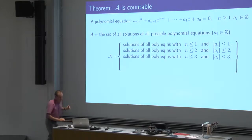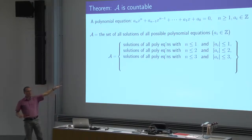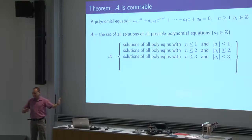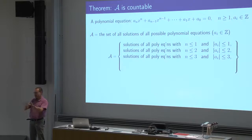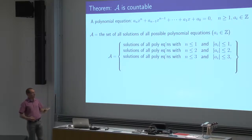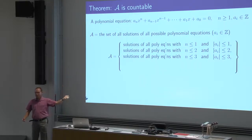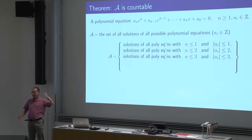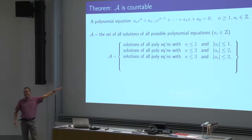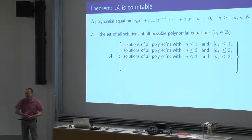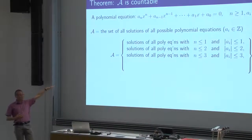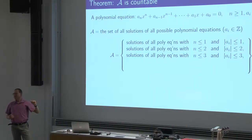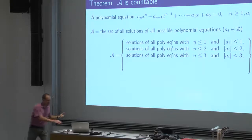You keep going — all of degree at most 4 with all absolute values at most 4, and so on. This is a perfectly good procedure to make an infinite list. Are the solutions of that pretty random equation in the list? Yes — at some point, namely on line 980, this is a polynomial of degree at most 980 and all coefficients in absolute value at most 980, so its roots are listed on line 980.